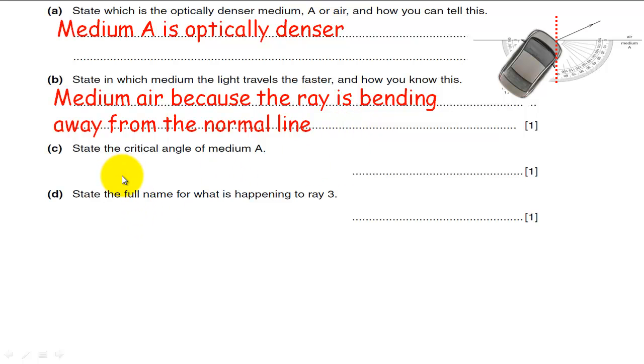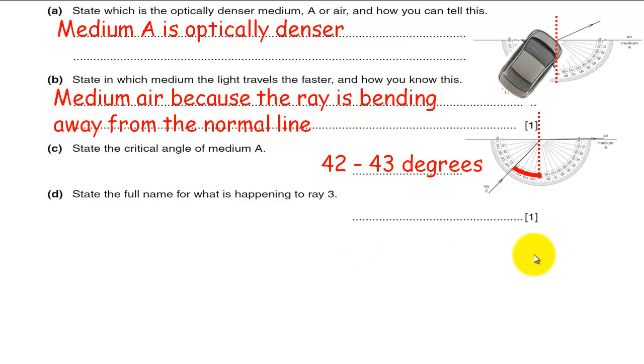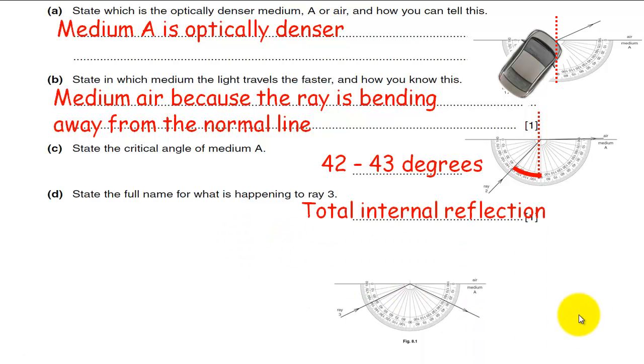State the critical angle of medium A. That was the second picture. You just want to try and get this angle. It will be approximate. Don't fall for the trap of reading that the angle is about 48 degrees, because that's 48 degrees from there to there. But from there to there, it's going to be 90 minus 48, which is about 42 degrees. State the full name of what's happening to ray 3. With ray 3, we just saw total internal reflection.